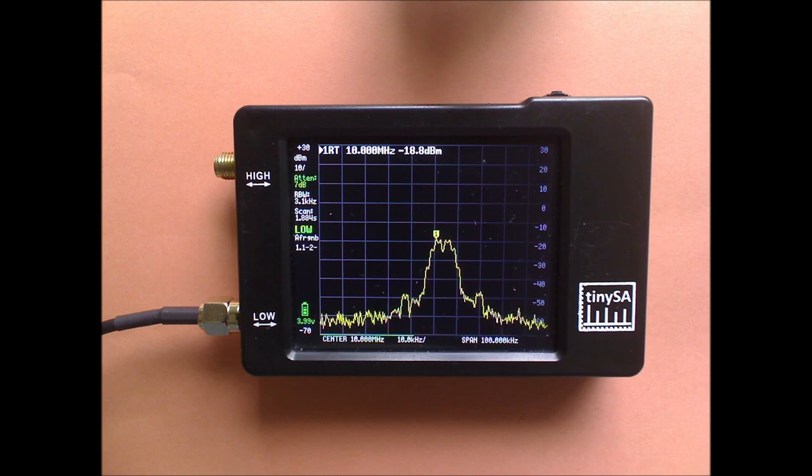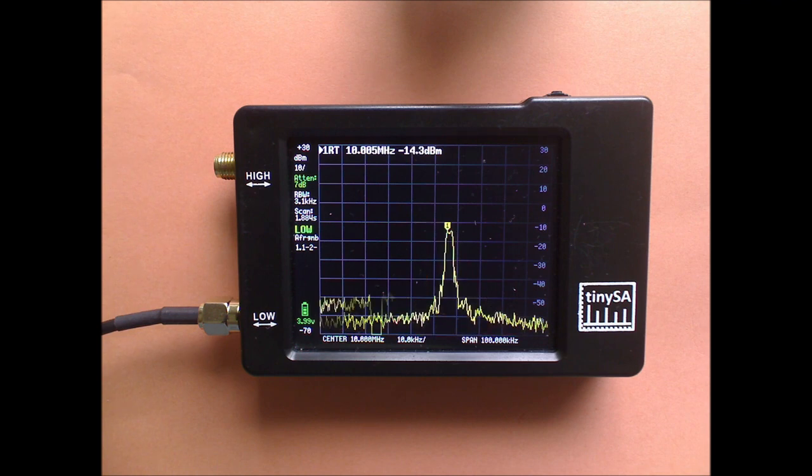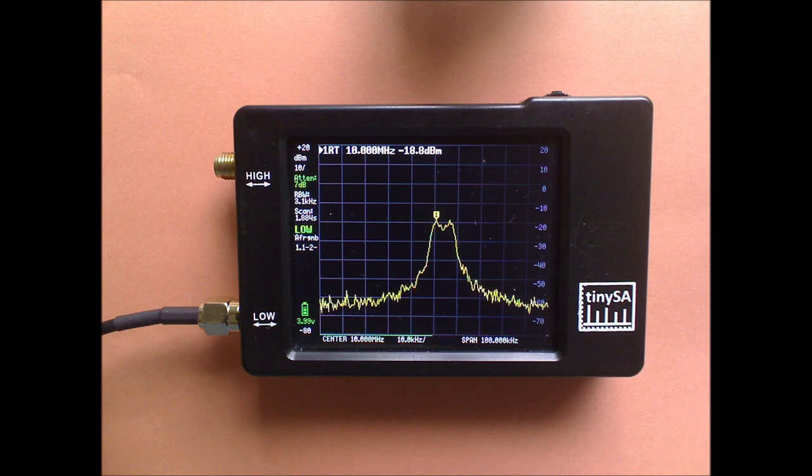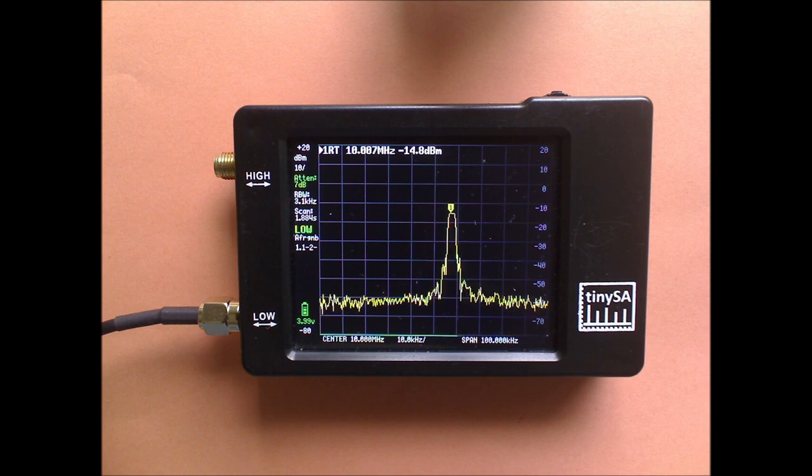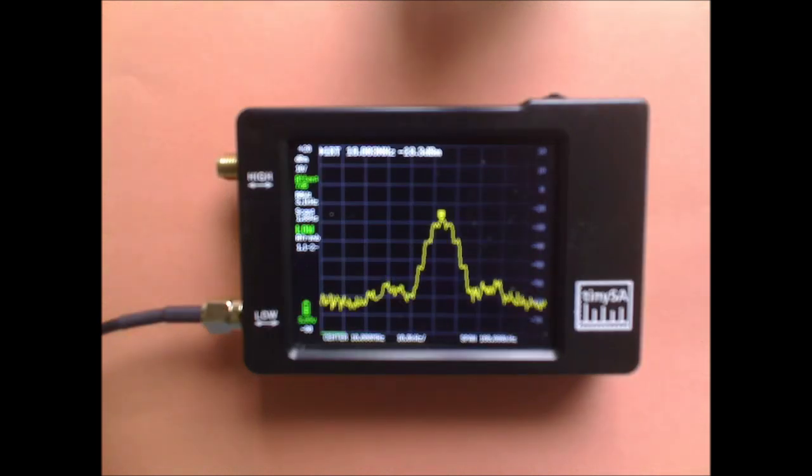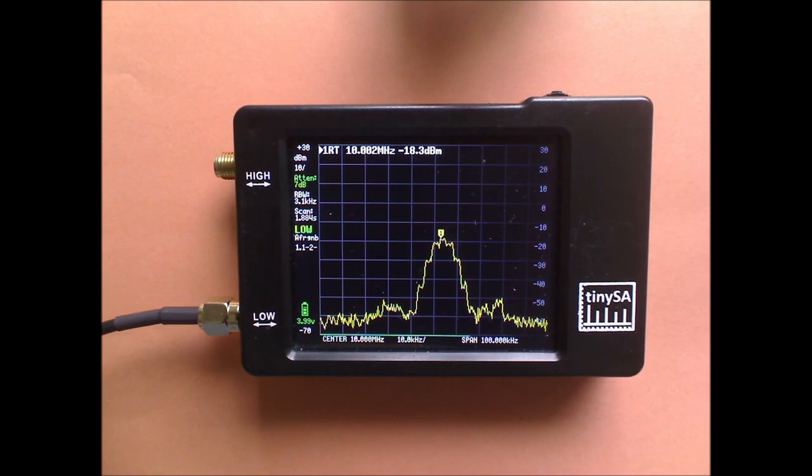And the dip occurs if there is a very special relationship between the frequency deviation and the modulation frequency. And this dip occurs if you have a modulation of 2 kHz with a frequency deviation of 5 kHz. If I change the modulation, for instance, to 1 kHz, you see the sharp dip disappears. And if I set it to 3 kHz, the sharp dip is gone completely.